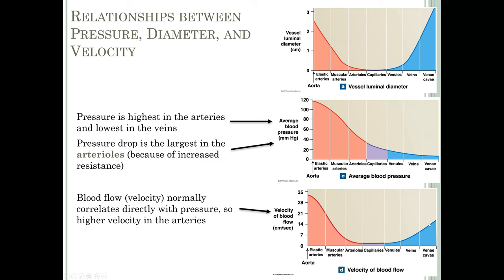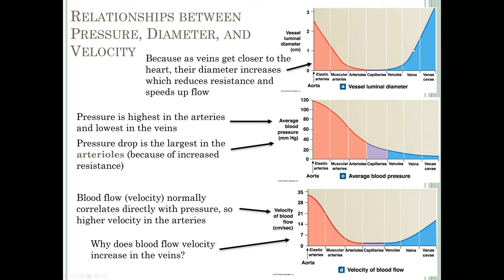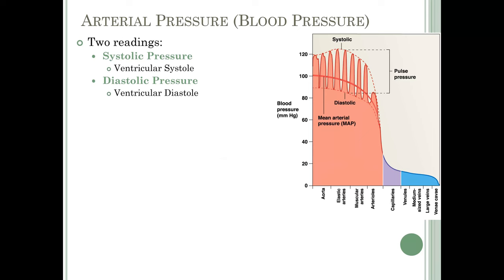Normal blood pressure is 120/80. Hypertension is abnormally high blood pressure — the most common blood pressure problem. Prehypertension is systolic 120-139 or diastolic 80-89. Stage 1 hypertension is systolic 140-159 and diastolic 90-99, at which point treatment is likely needed. Hypotension is abnormally low blood pressure, usually only a problem with significant blood loss or overtreatment of hypertension. Hypertension increases the workload of the heart, can cause the left ventricle to enlarge, and stresses vessel walls, increasing risk for atherosclerotic plaques and aneurysms.